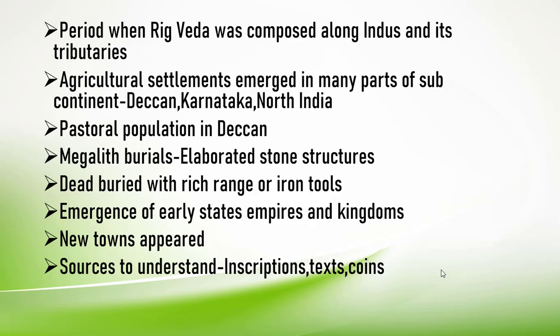Rigveda was composed along the Indus and its tributaries. In our Hindu dharma there are four Vedas, and Rigveda is the oldest one — it was composed during that same period. We are discussing the period of 600 BC. Agricultural settlements emerged in many parts of the subcontinent — bahut saare parts mein agricultural settlements bahut emerge hua tha.